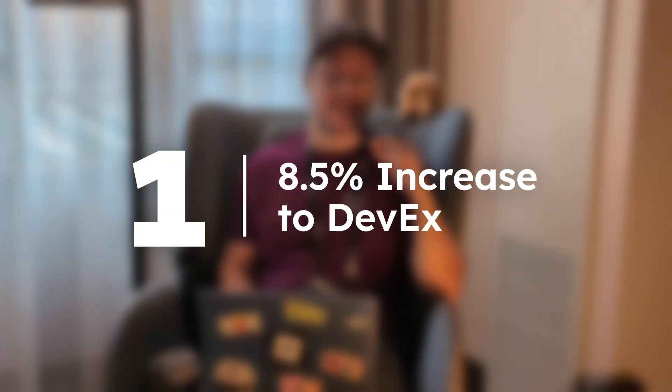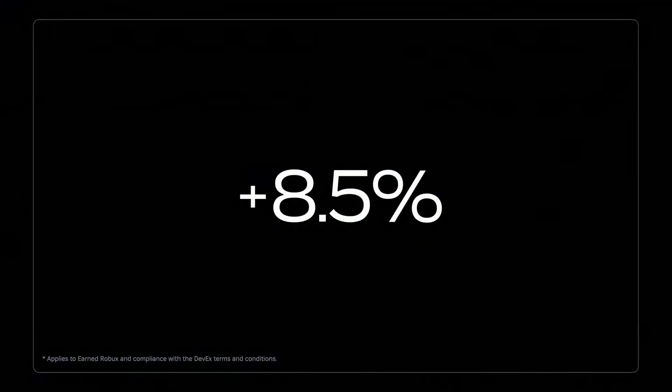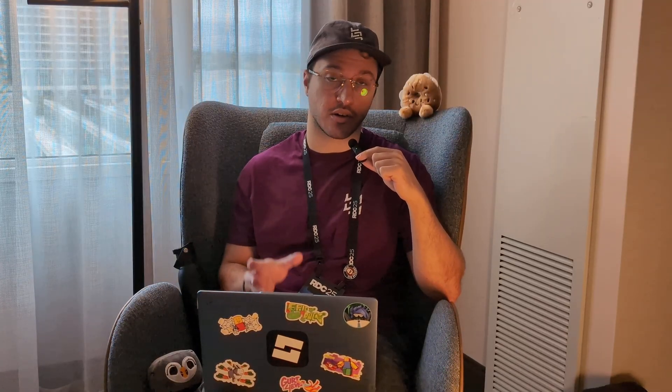And finally, number one — the DevEx rate increase. This got a great reaction from the crowd, as you might expect with a room full of developers. The DevEx rate is increasing by approximately 8.5%. Before, you had 100,000 Robux and could cash that out for $350 — you'll now be able to cash that out for $380 instead, as of 10 a.m. Pacific time on September the 5th. Anything earned from that day onwards will cash out at the new rate; any Robux earned before that time will use the old rate. The jump from $350 to $380 is actually slightly higher than 8.5%, so that's a nice surprise.